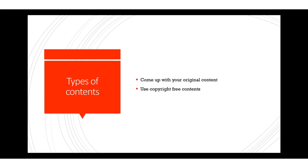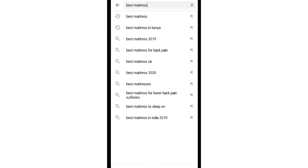What types of content can you create? Number one is original content, which is definitely the best way to build a great channel, win people's trust, grow subscribers, and get people to purchase through you. If you're not able to create original content, you can start with copyright-free content available on the internet and on YouTube — and I'll show you how to find it so you won't get banned.